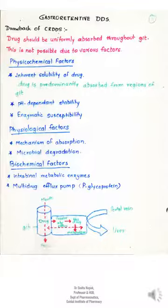When administered orally, such delivery systems reach the stomach and start releasing the drug over a long period of time as they transit throughout the GI tract until the remnants are excreted. However, such controlled release drug delivery systems have several drawbacks.